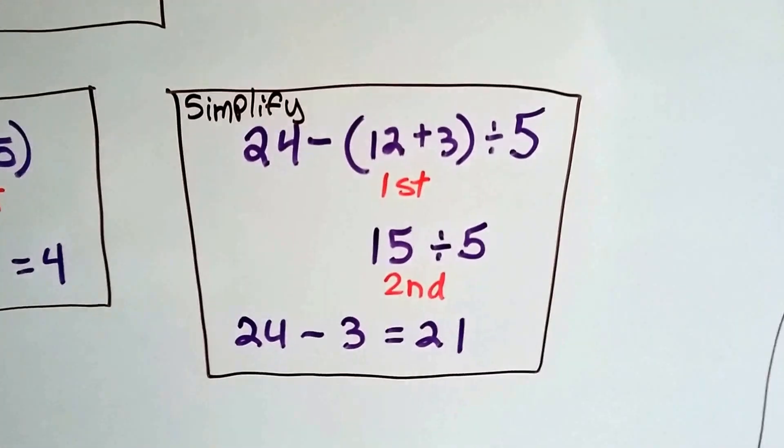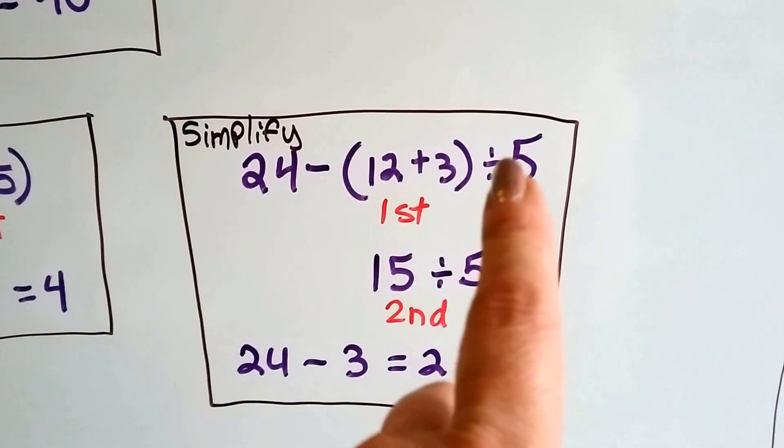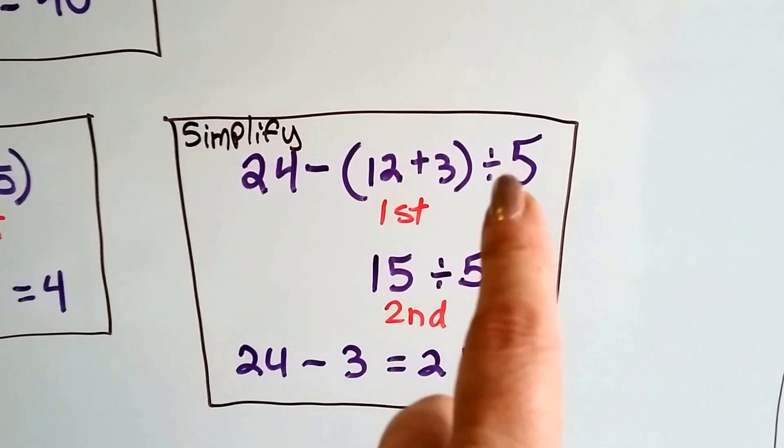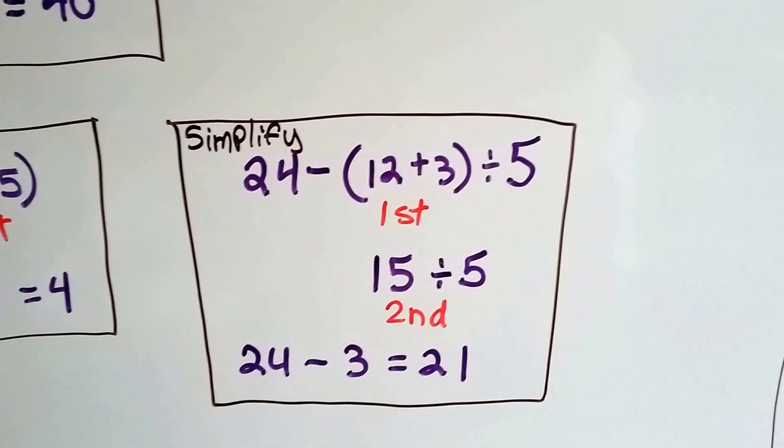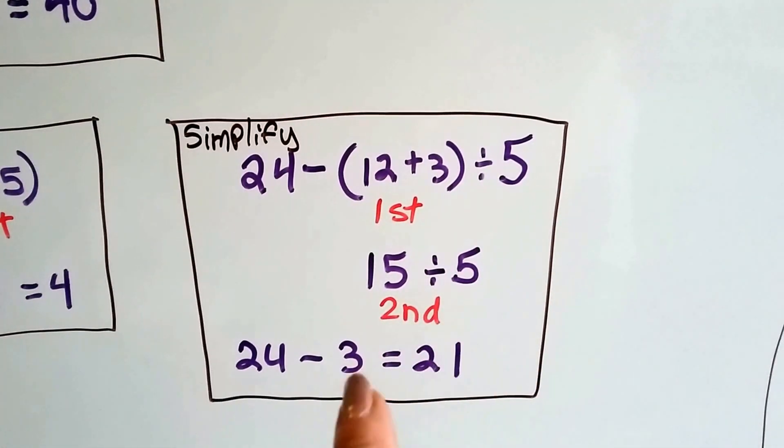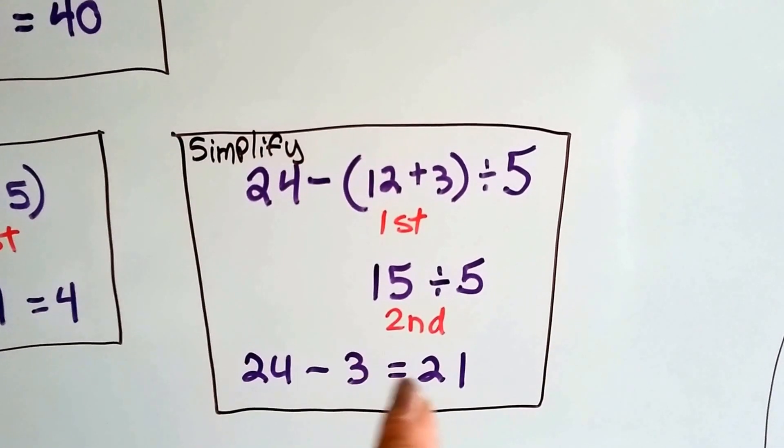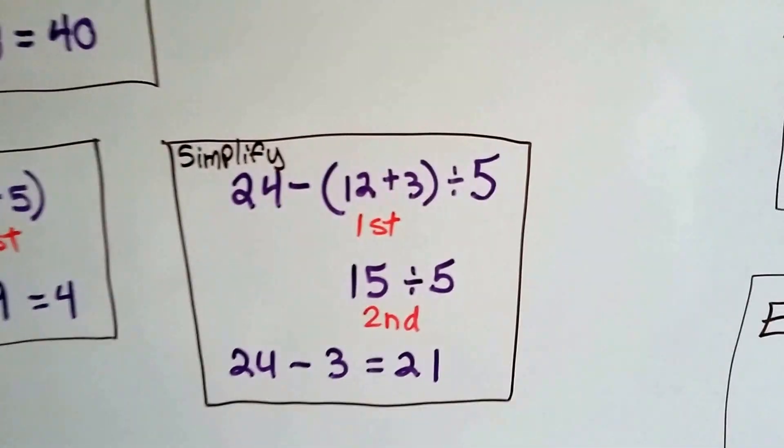If we're supposed to simplify this one, we do the parentheses first. See, there's subtraction and there's division, so we've got to do this one. We do the parentheses, then we do this one, then we subtract last. So 12 plus 3 is 15. 15 divided by 5 is 3. Now we do our subtraction. 24 minus 3 equals 21.